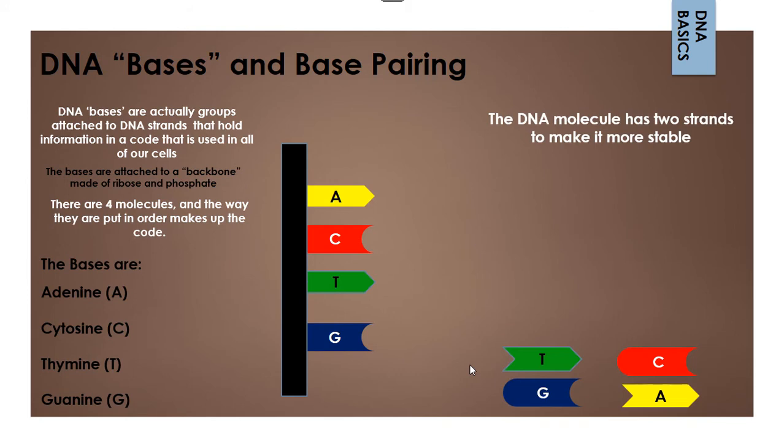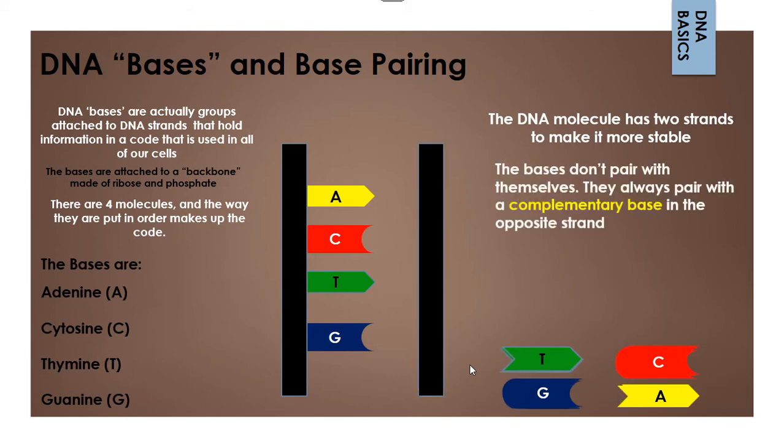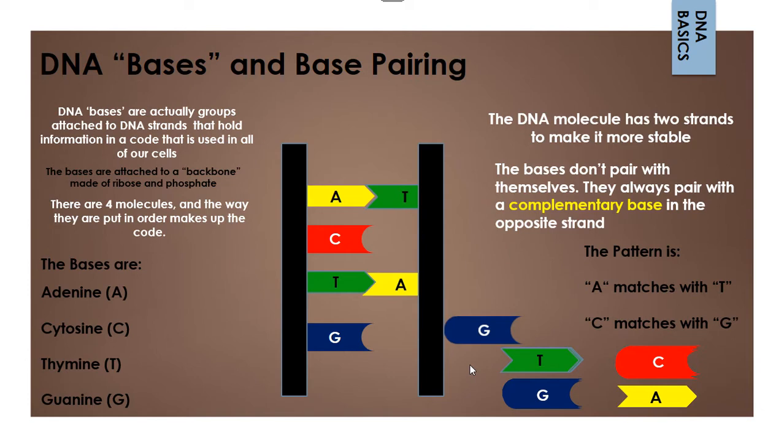Now, to make it more stable, DNA is a double-stranded molecule, but it isn't the same bases across from each other. Instead, what happens is bases are considered complementary, and the way it works is that A and T always go together, whichever side of the double-stranded molecule they're on. C and G always go together, whichever side of the molecule they're on.